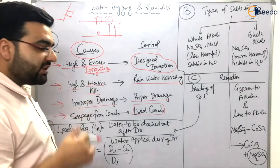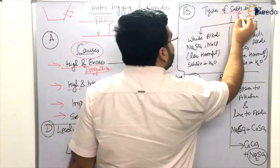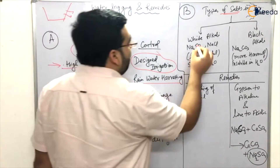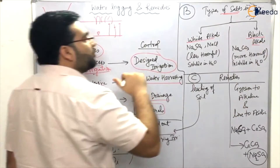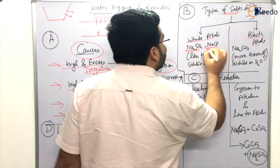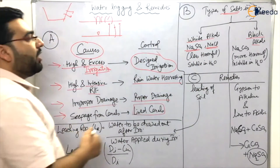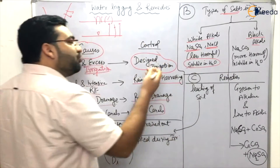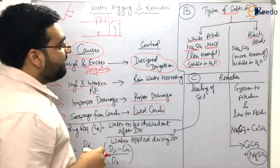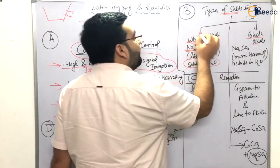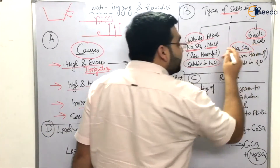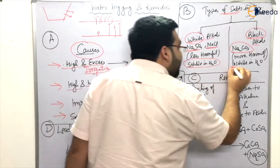When the pores get choked, it is because irrigation water contains salts. There are two types of salts: white salt and black salt, also known as white alkali and black alkali. In white alkali we have Na₂SO₄ and NaCl — these are less harmful because they are easily soluble in water. In black alkali we have Na₂CO₃ — this is very harmful because it is insoluble in water. These questions have already been asked in examinations.